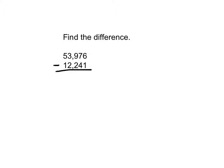The nice part about this problem is that there is no regrouping. 6 minus 1, we do start in the ones place, is 5. 7 minus 4 is 3. 9 minus 2 is 7. 3 minus 2 is 1. And 5 minus 1 is 4. So my answer is 41,735.